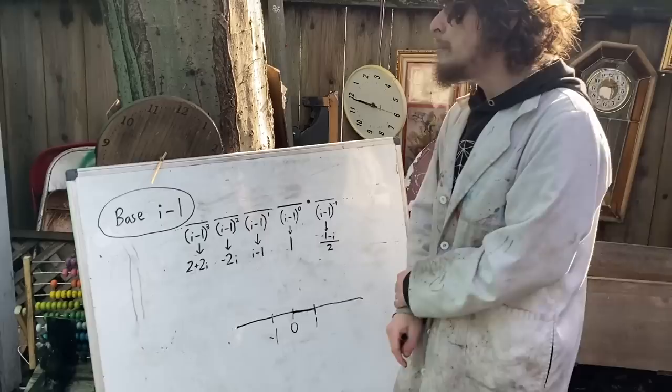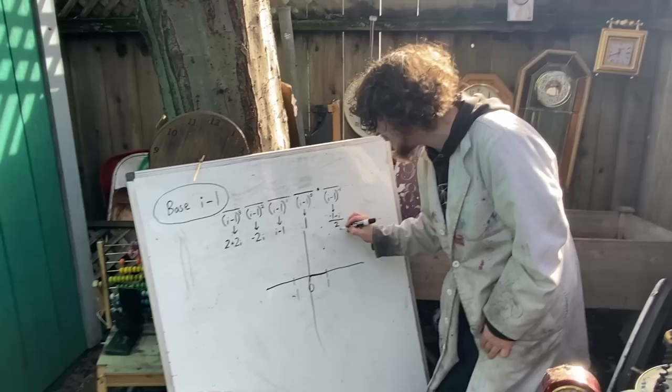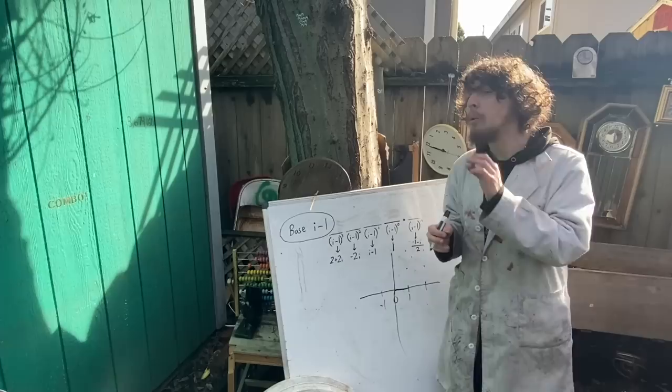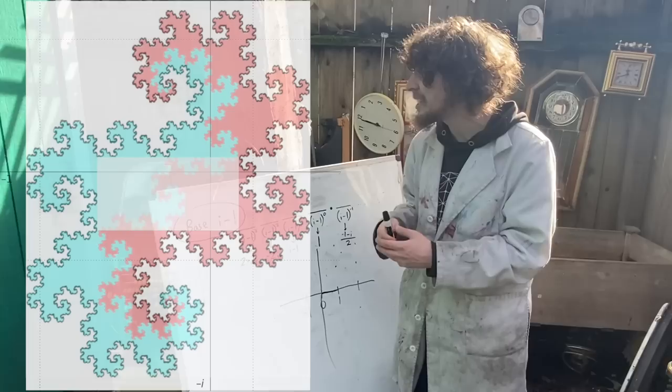But with base i minus one, where we can describe numbers on a whole plane, and look at all the Gaussian integers, then we get a much more interesting story. Let me show you on screen what shape we would get if we took the complex plane and filled in all of the coordinate points that were numbers with their integer component entirely zero in base i minus one. It's this shape called the twin dragon, a fractal that is self-similar, where if you zoom into its boundary, you'll see copies of the same thing infinitely.